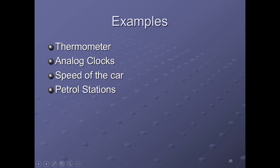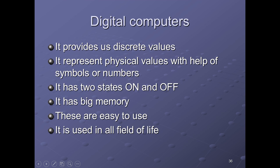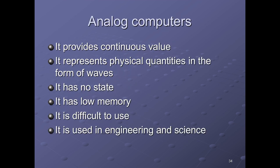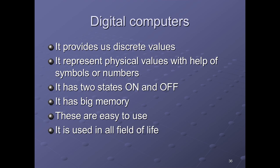Digital computers use discrete values — discrete means countable, whereas analog uses continuous values, meaning you cannot count them. Digital computers represent physical values with the help of symbols or numbers. They work with two states: on or off — on means one, and off means zero, which relates to the binary number system and machine code. They have big memory, are easy to use, and are used in all fields of life. Examples include digital clocks, calculators, laptops, computers, and scoreboards.